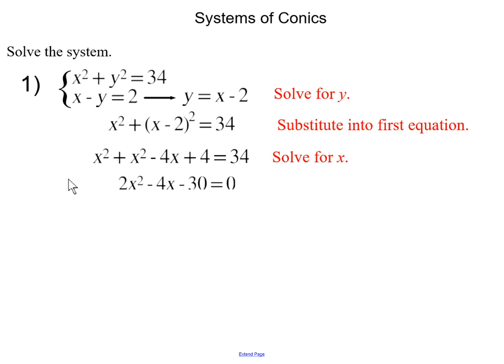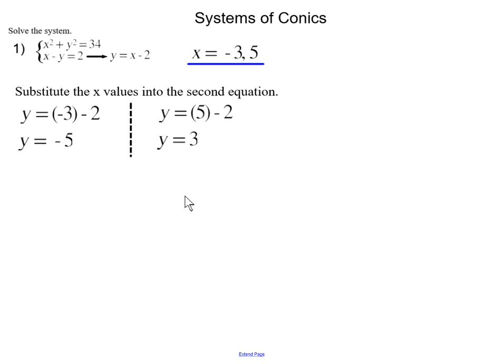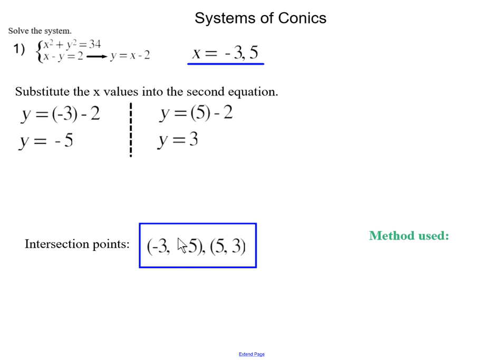I solve for x by combining like terms and dividing both sides by 2, then factoring to get (x minus 5)(x plus 3) equals 0, so x equals negative 3 and 5. Using those x values substituted into the second equation, y equals negative 5 when x equals negative 3, and y equals 3 when x equals 5. That gives us our two intersection points: (negative 3, negative 5) and (5, 3).